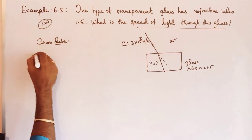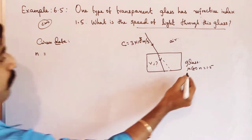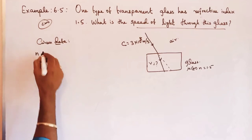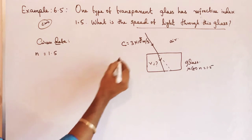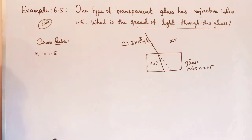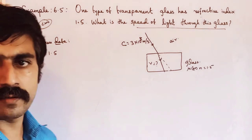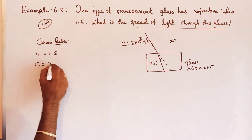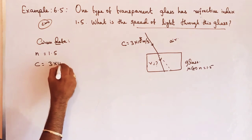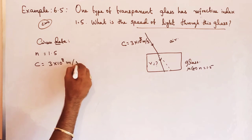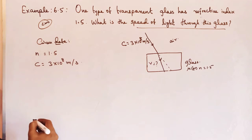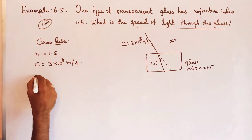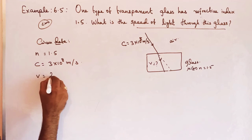Given: refractive index n or mu is equal to 1.5. Speed of light in air or vacuum, c, is equal to 3 into 10⁸ meter per second. Speed of light in medium, v, is equal to — question mark.